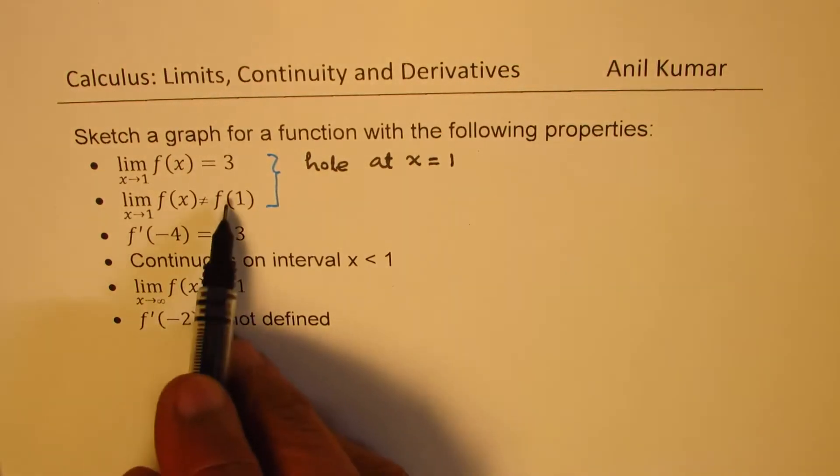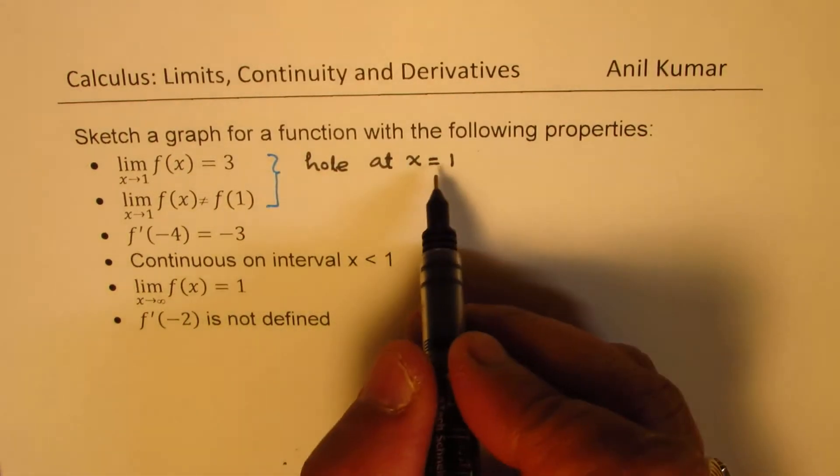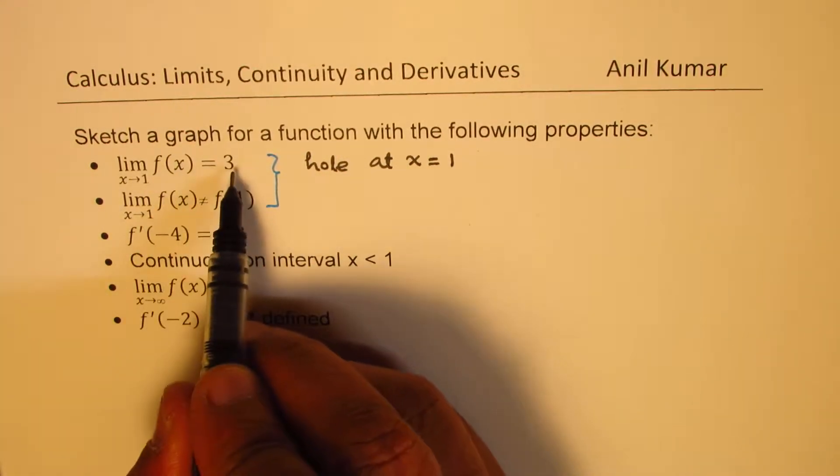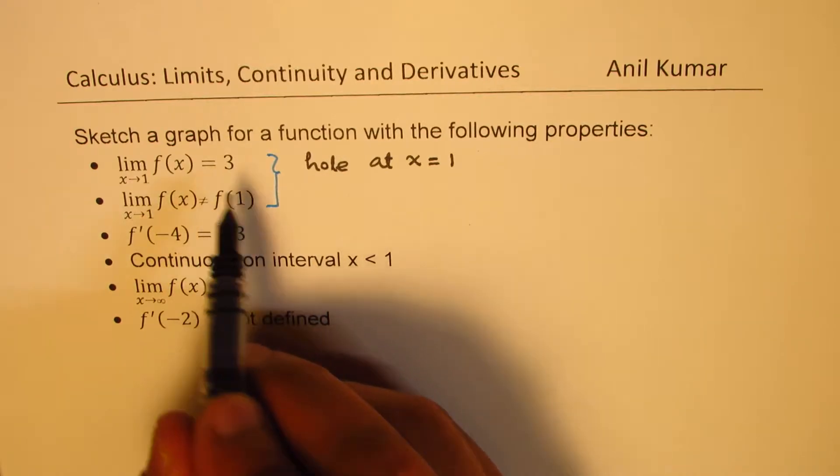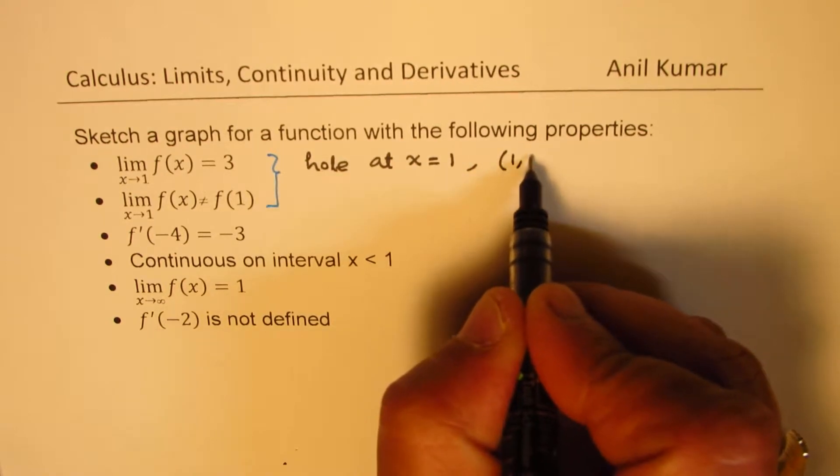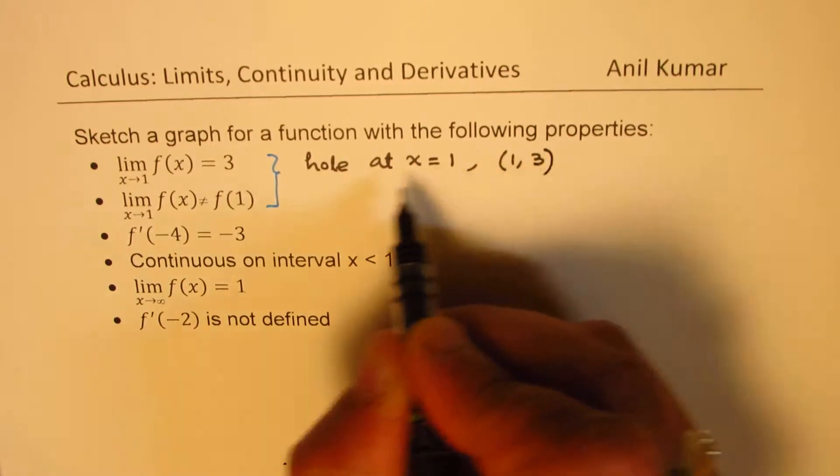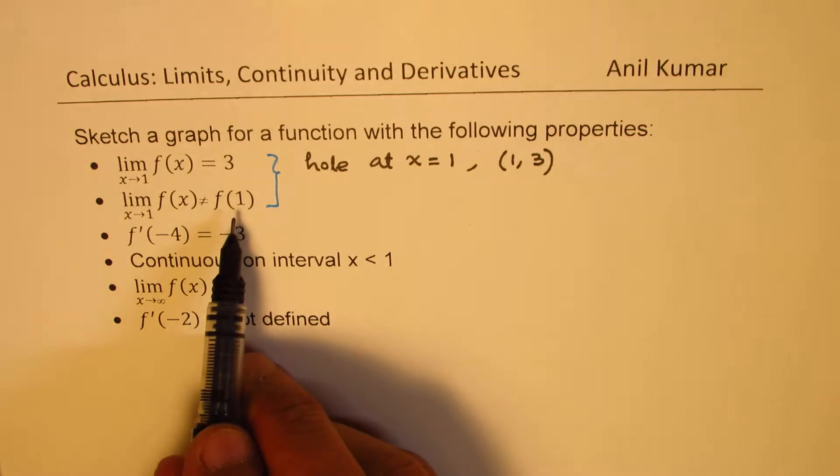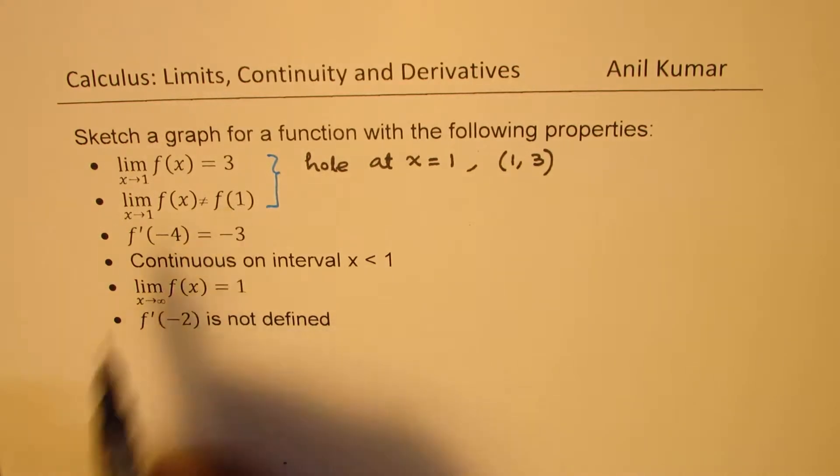So these two properties when combined suggest that there is a hole at x equals 1. That's what it suggests. And limit is 3. That means the position of the hole is at (1, 3). But the value of the function at 1 is something else.